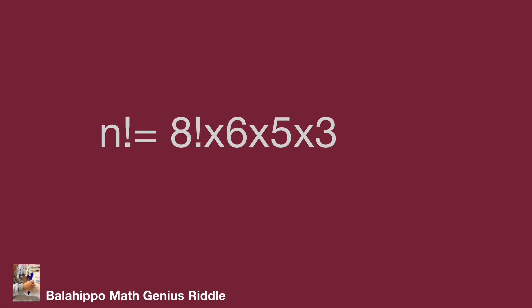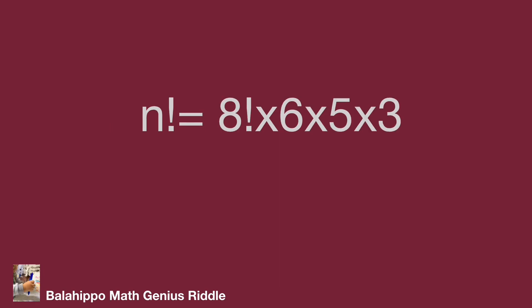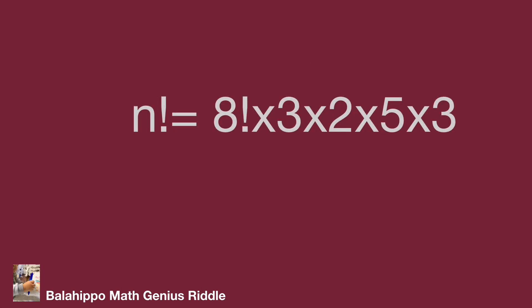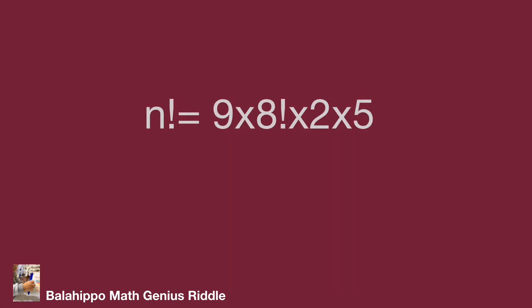Next, to generate 9 factorial from 8 factorial, we multiply by 9. We check the right side for a factor of 9: 6 equals 3 times 2, so we rewrite as n factorial equals 8 factorial times 3 times 2 times 5 times 3. Then 3 times 3 equals 9, which is the number we need. Adjusting the sequence: 9 times 8 factorial equals 9 factorial, so the new equation is n factorial equals 9 factorial times 2 times 5.